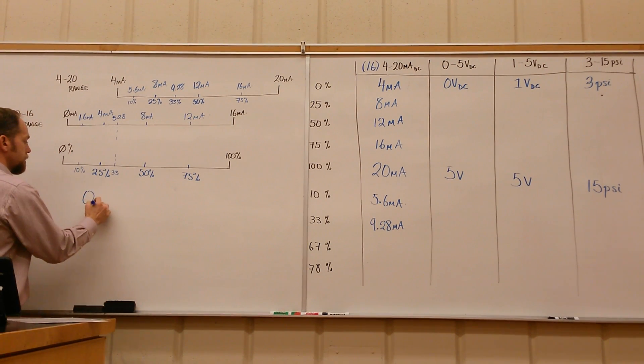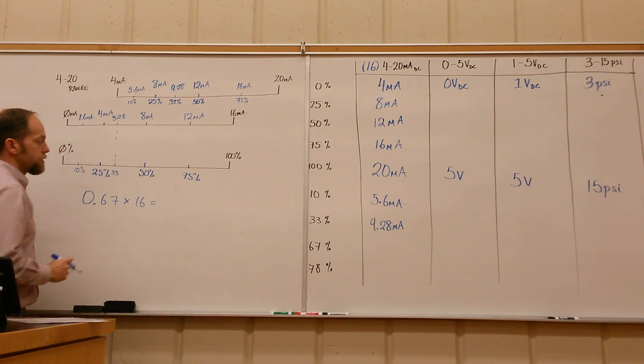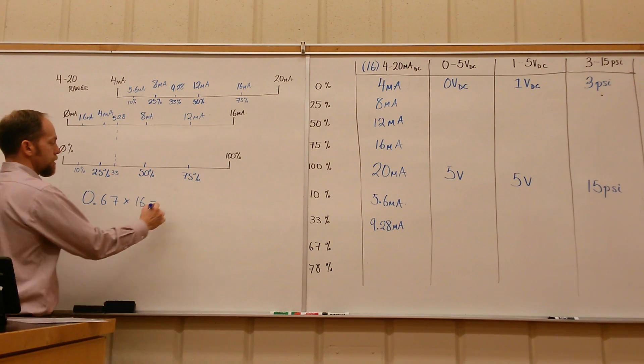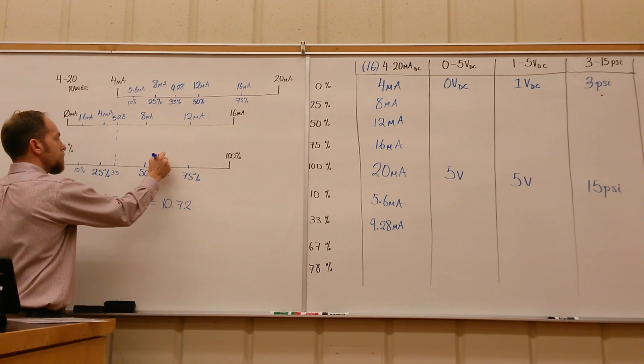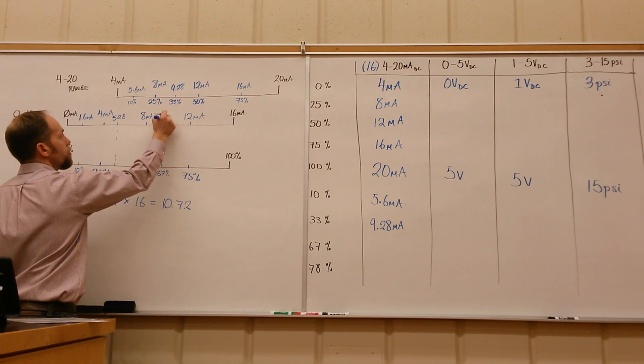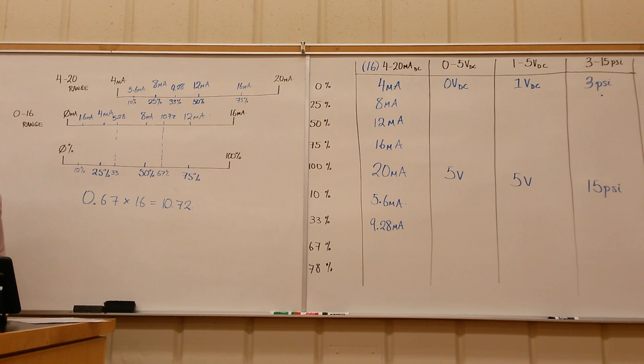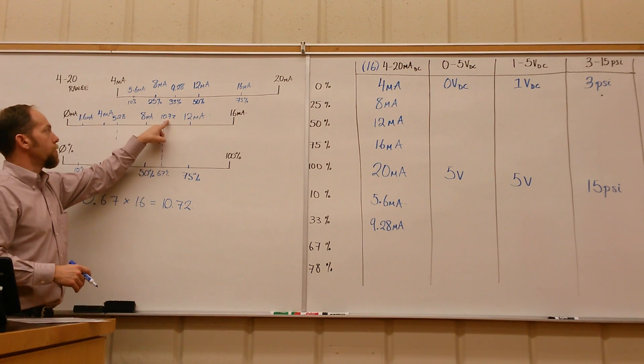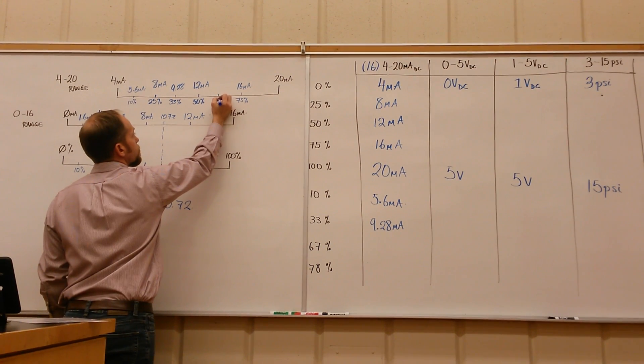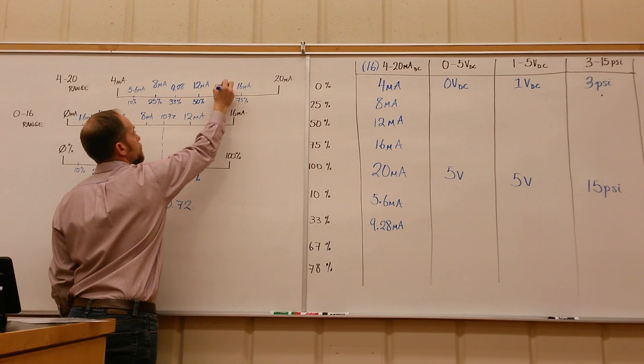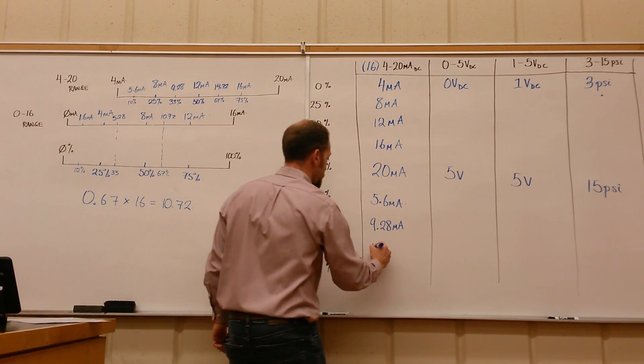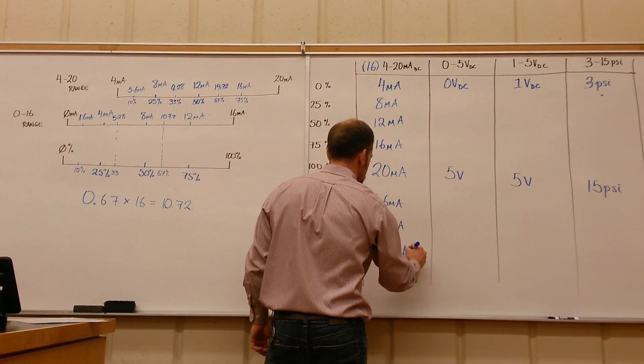We've got 67%, so we're going to take 0.67 times our 0 to 16 range, and that gives us 10.72. On the 0 to 16, we've got 10.72 milliamps. But that's no good because we can't tell whether there's current or no current. We've got to have an elevated 0, so we're going to add 4 to this guy. So 67%, 10.72 plus 4 gives us 14.72 milliamps.